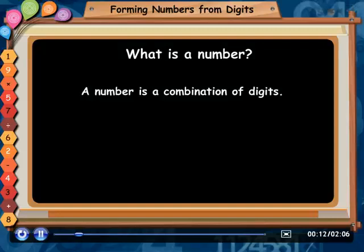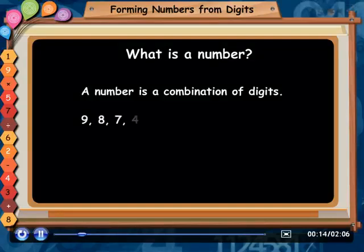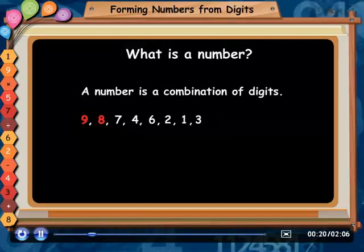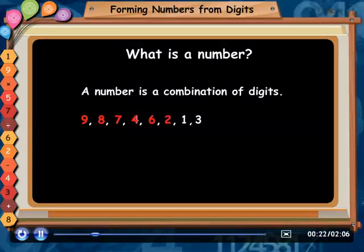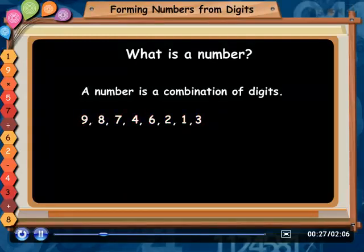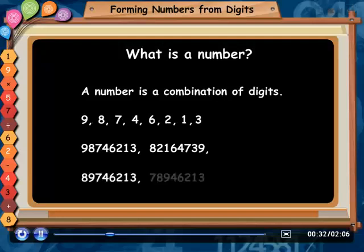For example, 98746213. Look at these numbers: 9, 8, 7, 4, 6, 2, 1, and 3. This consists of 8 digits. By these numbers, we can form many numbers as shown.